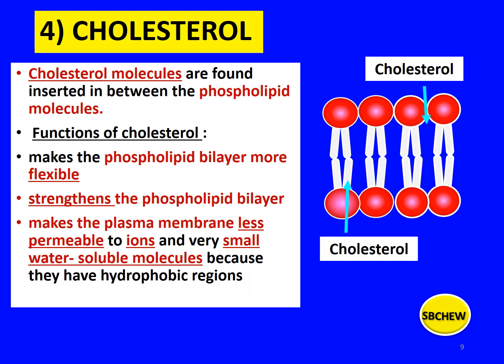The fourth and final component of the plasma membrane is cholesterol. We normally regard cholesterol as harmful because it causes heart problems, but cholesterol is very important because it helps build the plasma membrane. Cholesterol molecules are inserted in between the phospholipid molecules. Its functions are: first, it makes the phospholipid bilayer more flexible and elastic; second, it strengthens the phospholipid bilayer; and third, it makes the plasma membrane less permeable to ions and water-soluble molecules, because cholesterol has hydrophobic regions that repel these water-soluble molecules.